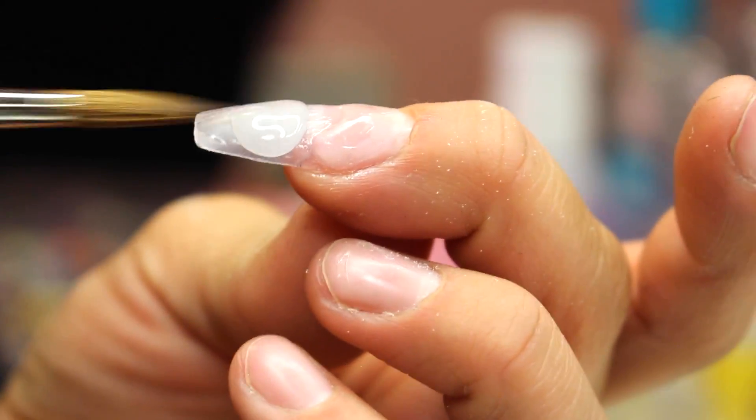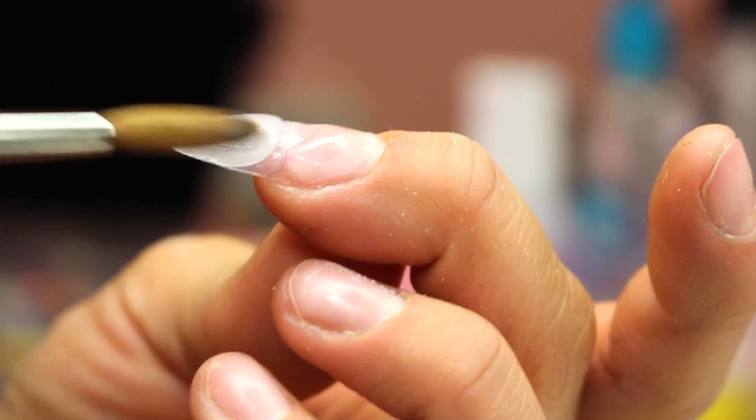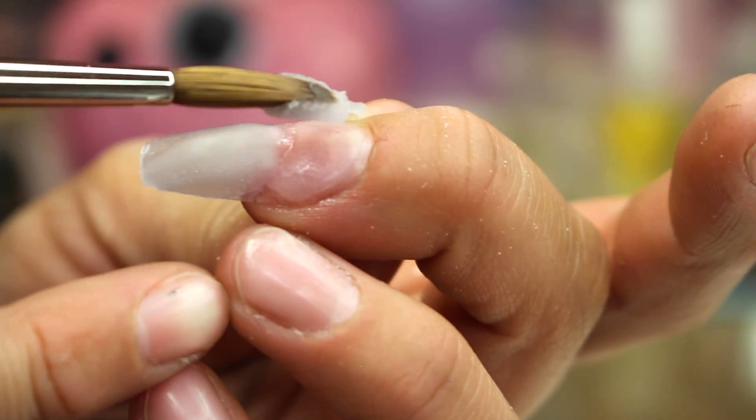I'm just applying another bead here in the middle and just brushing it downwards. Then I like to flip my brush, turn it around and brush upwards so that it blends in really good. And like I said, forgive me, I will get better at this.